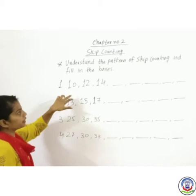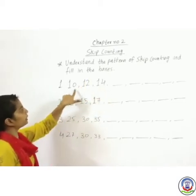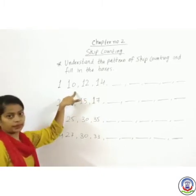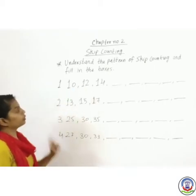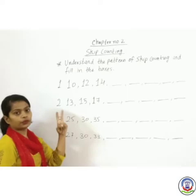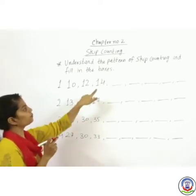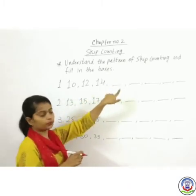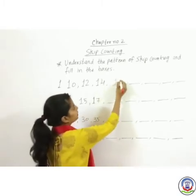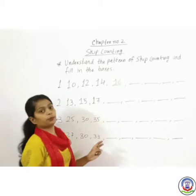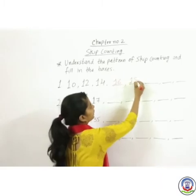Number 1 — the numbers given are 10, 12, 14. We will see how many skip counting is done. From 10 to 12: 11, 12 — so we are skipping 2 numbers. We will write 16, then skip two numbers to get 18.